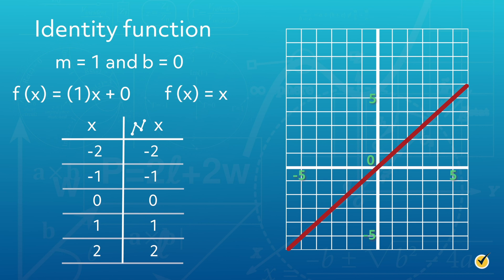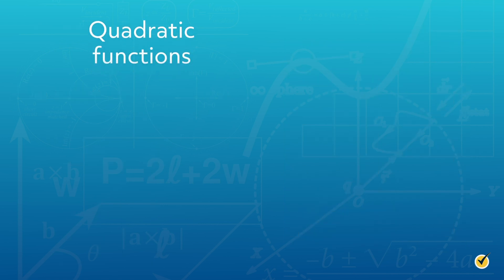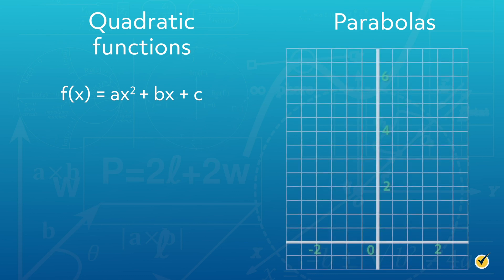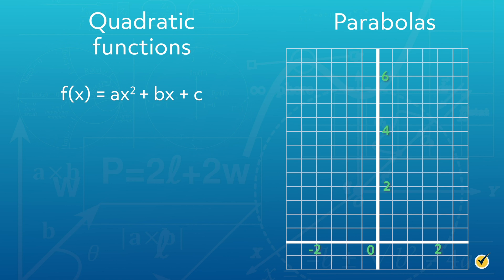Now that we have discussed linear functions and how they graph straight lines, we can move on to quadratic functions and the parabolas of the graph. The quadratic function can be recognized in standard form as f of x equals ax squared plus bx plus c, where a, b, and c are constants. The squared variable of the quadratic ensures symmetry in the parabolic shape that is graphed, meaning that each point on the graph, with the exception of the vertex, will have a mirror image on the other side of the graph.